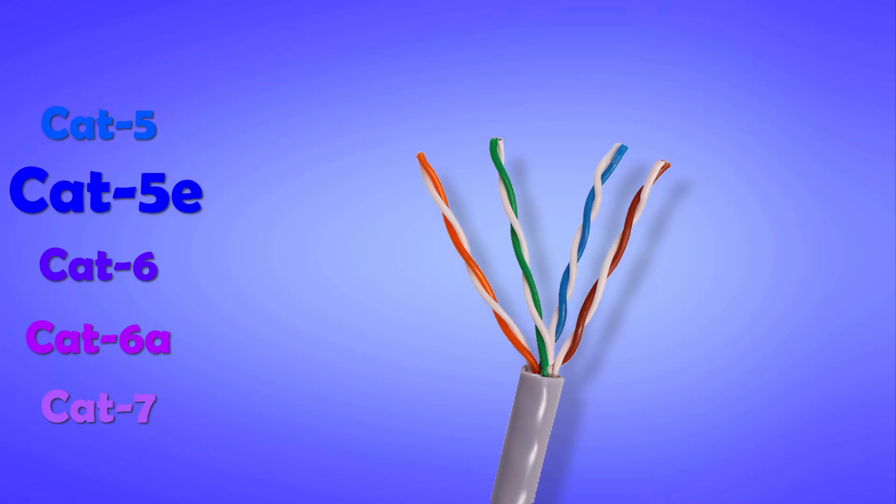The terms Cat5, Cat5e, Cat6, Cat6a, Cat7 basically indicate the composition and design of the cable, and of course performance of any cable depends upon its design and physical properties.